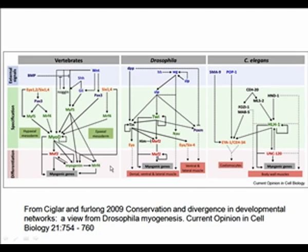Branchial arch muscles and extraocular muscles have a different inductive influence on muscle progenitor recruitment. In branchial arch and extraocular musculature, PTX2 is important, followed by MYF5 and MRF4 for determination, then MYOD and myogenin for differentiation. While progenitors in different regions respond to different inductive signals, the skeletal muscle cells themselves — as they differentiate — express the same set of genes. External signals specify cells into PAX3 expression; PAX3 then drives MYF5 and MRF4, influencing hypaxial and epaxial mesoderm to express MYOD, leading to differentiation from stem cells into mature skeletal muscle.